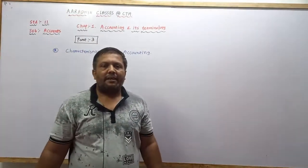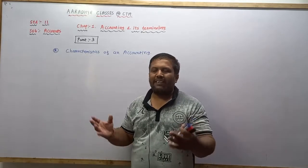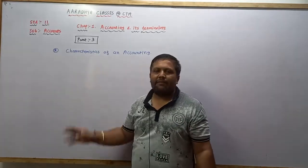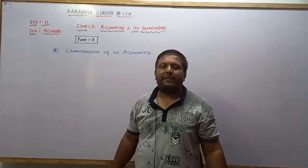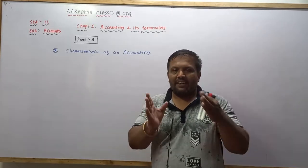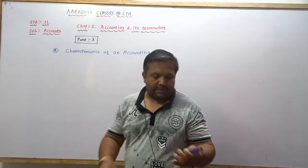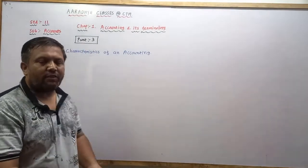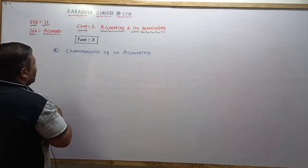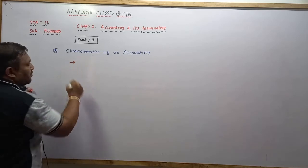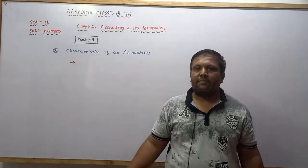Now I am going to explain the topic called Characteristics of Accounting. In this chapter, there are a total of seven important characteristics. I will explain them one by one. There are many characteristics, but the most important ones number seven. Note that the order can be changed — it's not necessary to maintain the same order I present them in.